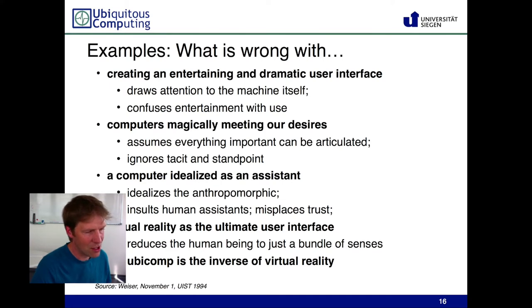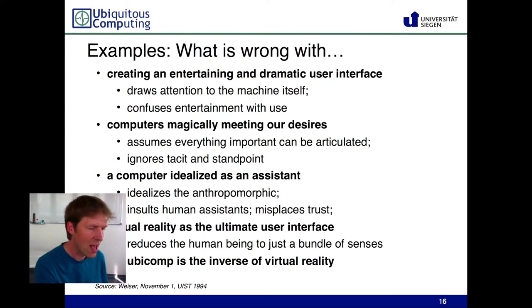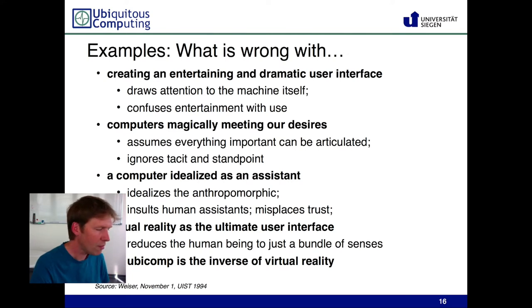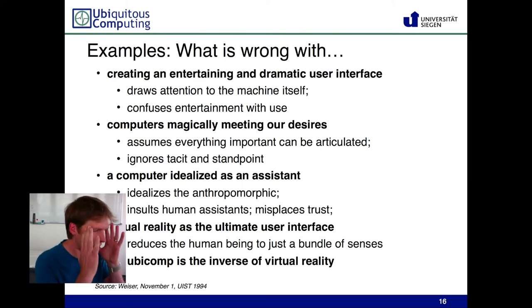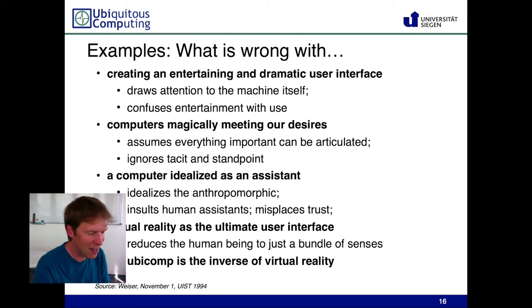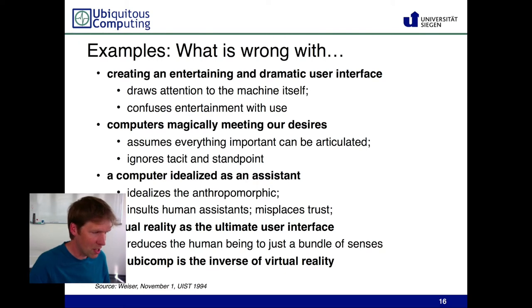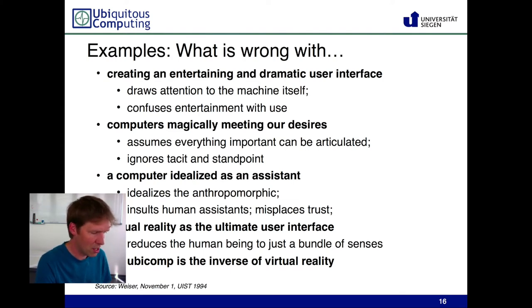Another thing that in the 90s was as big as it is now is virtual reality, where you put on glasses and the world is represented in a digital fashion — everything digitized and you can move around in it virtually, just as in the analog world. Weiser was against this for computing in general because it reduces the human to just sensing what is streamed into their eyes and other senses. Ubicomp is completely the opposite: you try to put the computer into the world in a distributed fashion, as part of the real world, rather than digitizing the real world and putting it into a parallel virtual reality.